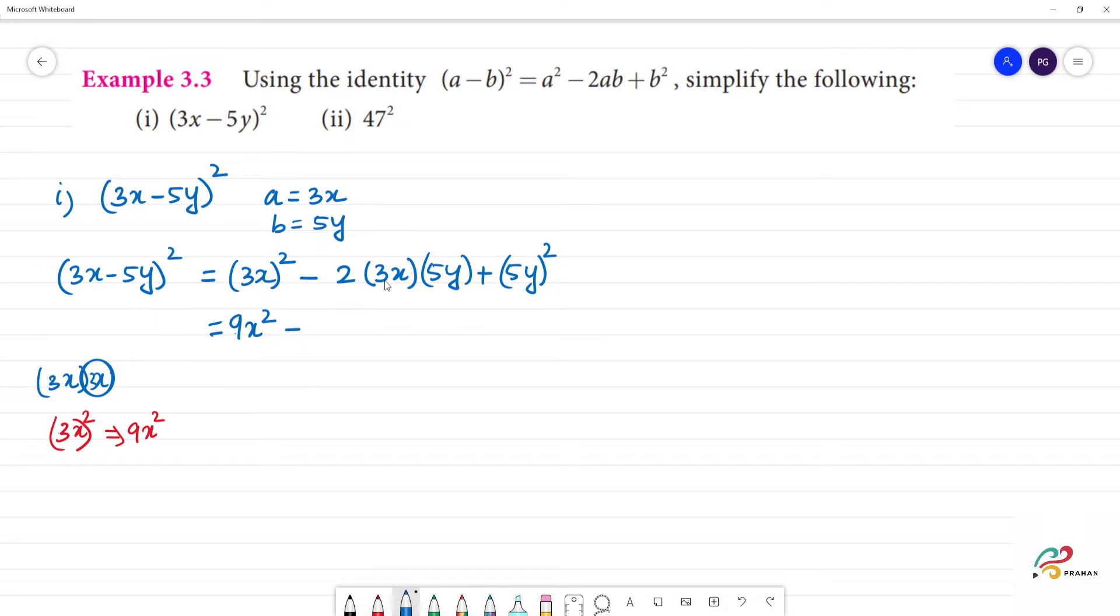Minus 2 into 3 is 6. 6 into 5 is how much? 30. First we multiply numbers. 30. x into y is xy.